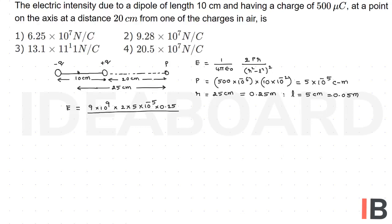0.25 by 0.25 whole square minus 0.05 whole square, that is whole power 2. After simplification, we will get 6.25 into 10 power 7.